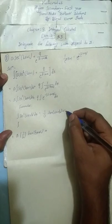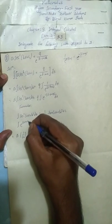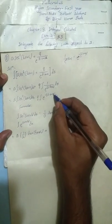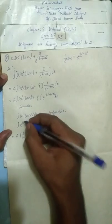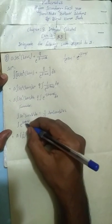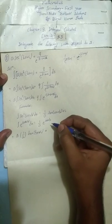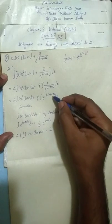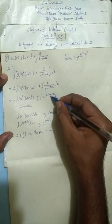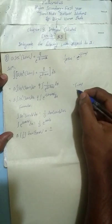Now for the exponential part: the integral of e to the power (ax + b) dx uses the formula one by a times e to the power (ax + b). Here the expression is e to the power minus (l minus mx), which is of the ax + b form. The coefficient of x here is minus m, but we also have a minus sign outside, so minus times minus m gives us plus m.